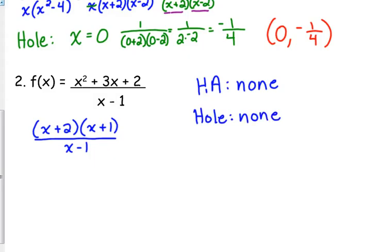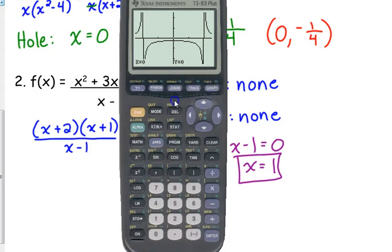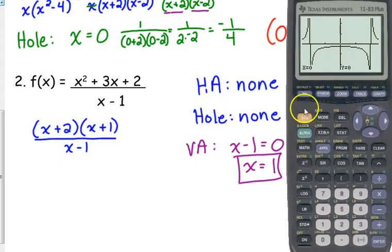So vertical asymptotes, all we have to do, take the denominator after simplifying. Well, nothing simplified, so it's just the denominator. Set it equal to zero. Solve for x. We have a vertical asymptote at x equals 1. Let me show you what this looks like graphically.